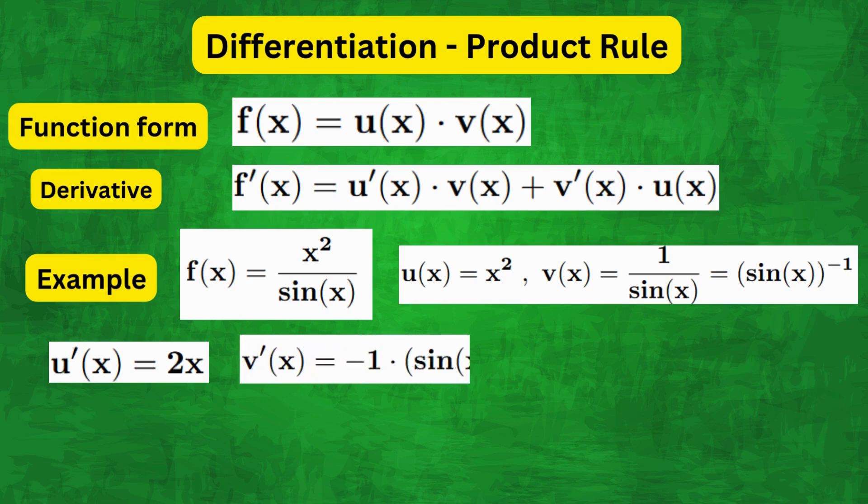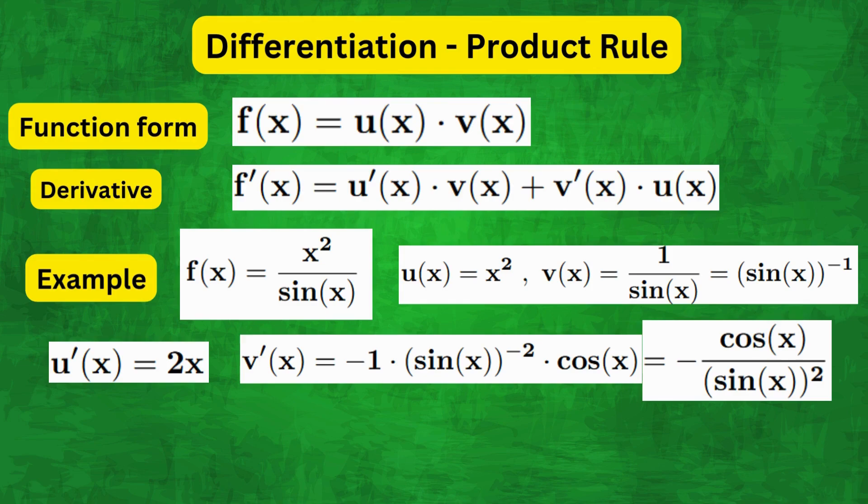So v'(x) becomes -cos(x)/sin²(x). Therefore f'(x) becomes 2x times 1/sin(x) minus cos(x)/sin²(x) times x².